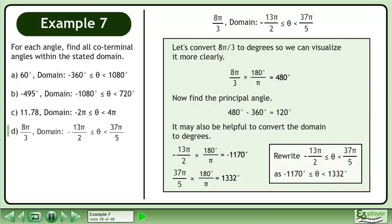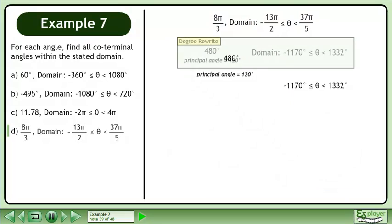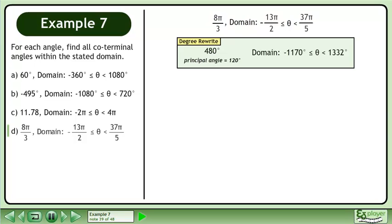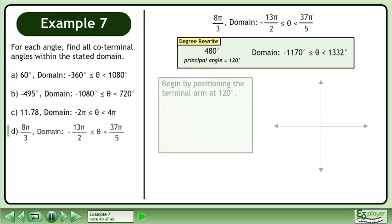We write the domain from radians to degrees. Now that we have rewritten all the radians as degrees, begin by positioning the terminal arm at 120 degrees.